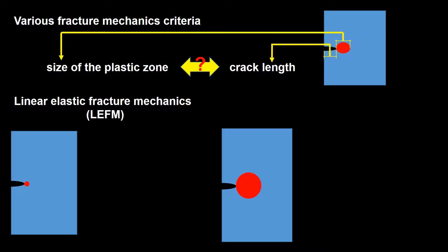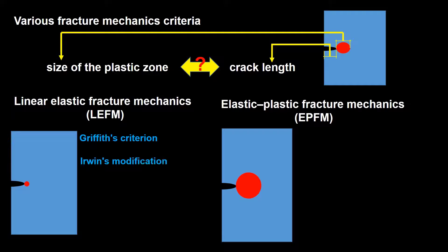On the other hand, if the size of the plastic zone is remarkable, like in metals, elastic plastic fracture mechanics or EPFM should be used. Criteria and Concepts of LEFM are Griffith's Criterion, Erwin's Modification, Stress Intensity Factor, and Strain Energy Release. These concepts will be discussed in the next videos of this playlist.